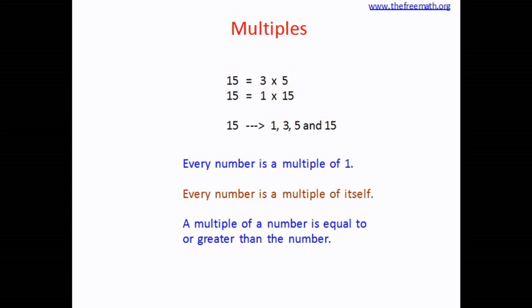In this case, 15 is equal to 15 and it is greater than 1, 3, and 5. Because a multiple is a number that comes in the table of that number, it can never be smaller than that number. It can either be equal or greater than the number.